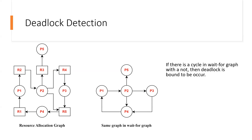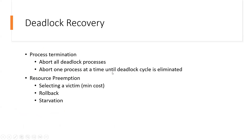So this was the overall deadlock detection using the resource allocation graph and wait-for graph. Next, we will talk about deadlock recovery — if a deadlock occurs, how do we recover from it? Keep watching. Goodbye.